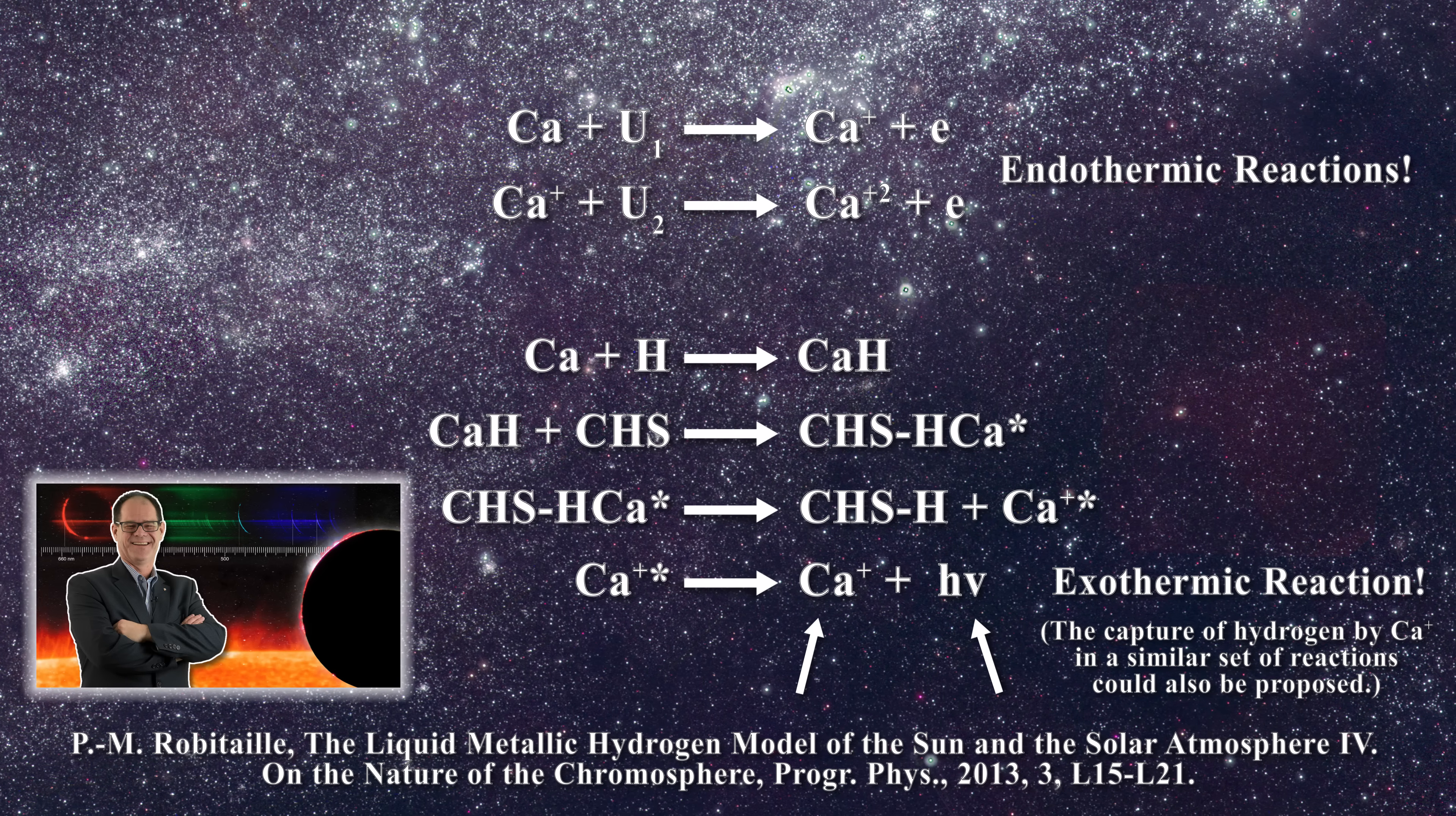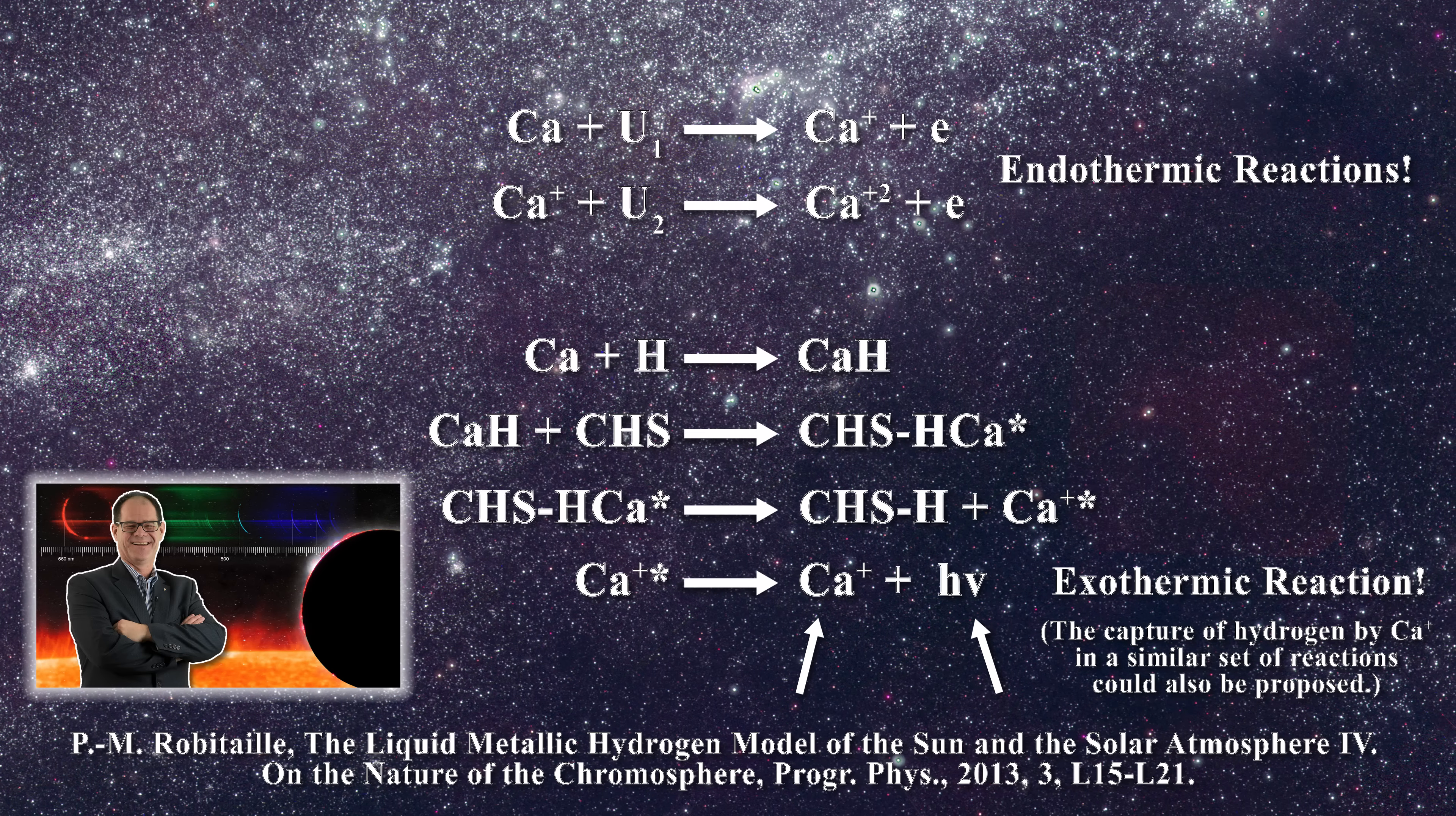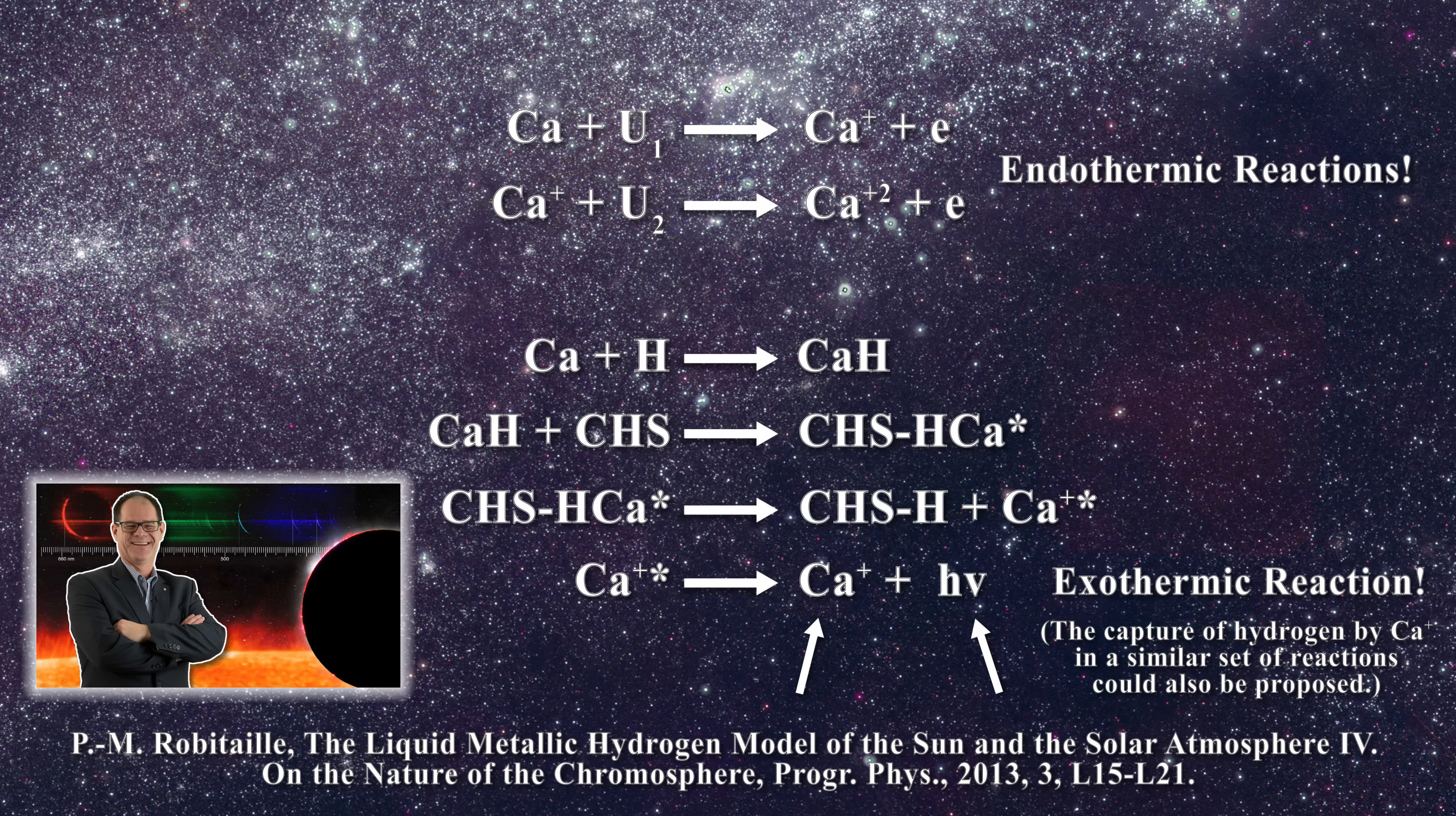The possibility that condensation reactions exist which lead to chromospheric emission lines places into question everything we know about electron pressures above the solar photosphere. Solar physicists are incorrect in their calculations because they have failed to properly consider the phase of the Sun itself.